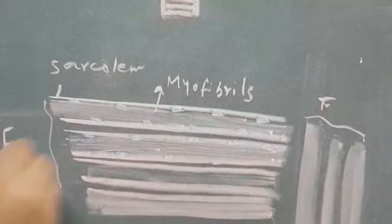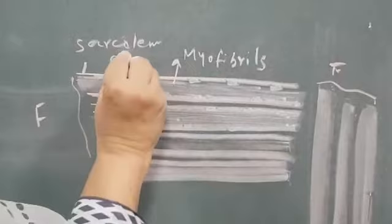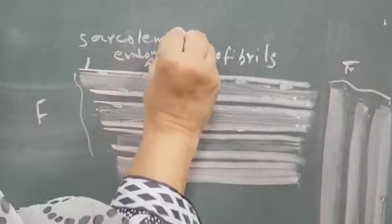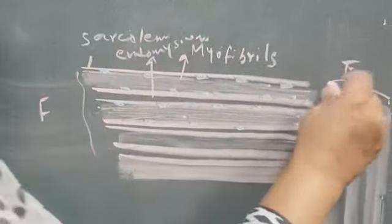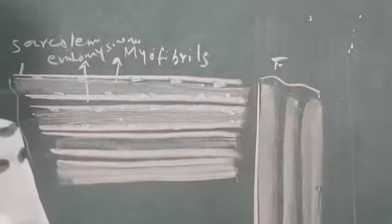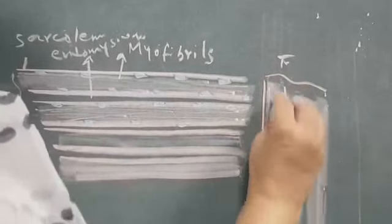In between these, you can label it as endomysium. This portion is for endomysium. And this is one fascicle. Similarly, you can draw an outline here. Fill it up with myofibrils.